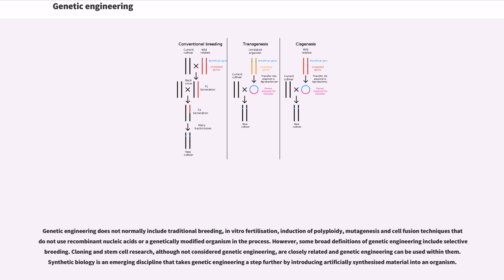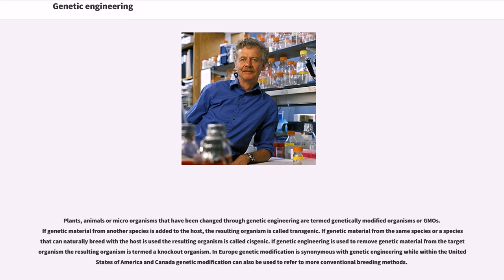Plants, animals, or microorganisms that have been changed through genetic engineering are termed genetically modified organisms, or GMOs. If genetic material from another species is added to the host, the resulting organism is called transgenic. If genetic engineering is used to remove genetic material from the target organism, the resulting organism is termed a knockout organism. In Europe, genetic modification is synonymous with genetic engineering, while within the United States and Canada, genetic modification can also be used to refer to more conventional breeding methods.